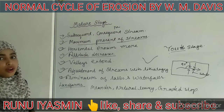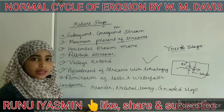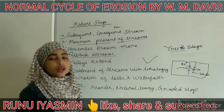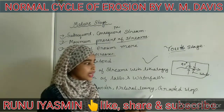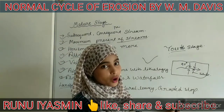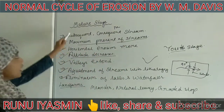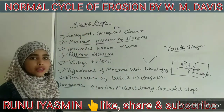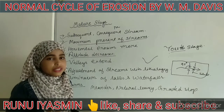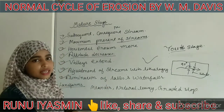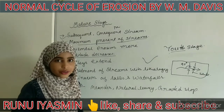Now understand the landforms produced in the mature stage. Due to deposition processes also happening here, the natural levee and graded slope are important features. The graded slope is very important to remember for the mature stage. You should write down the key points, as that will help you understand the concept more clearly.